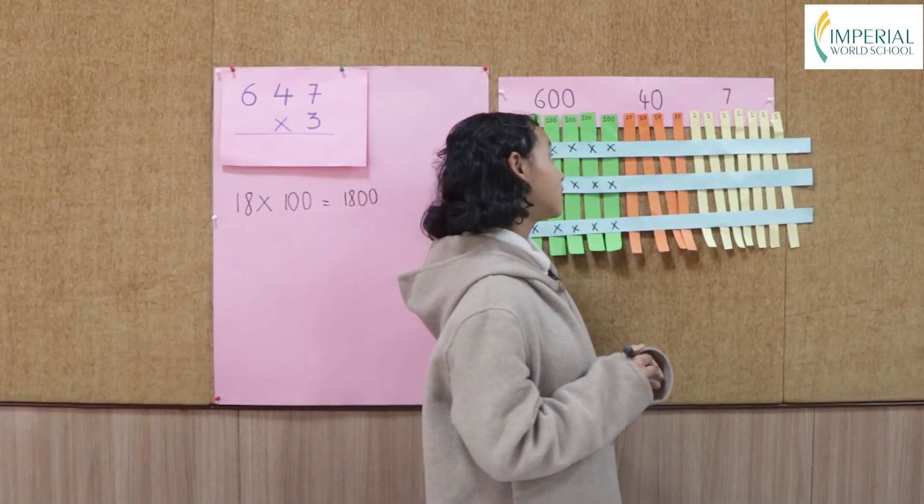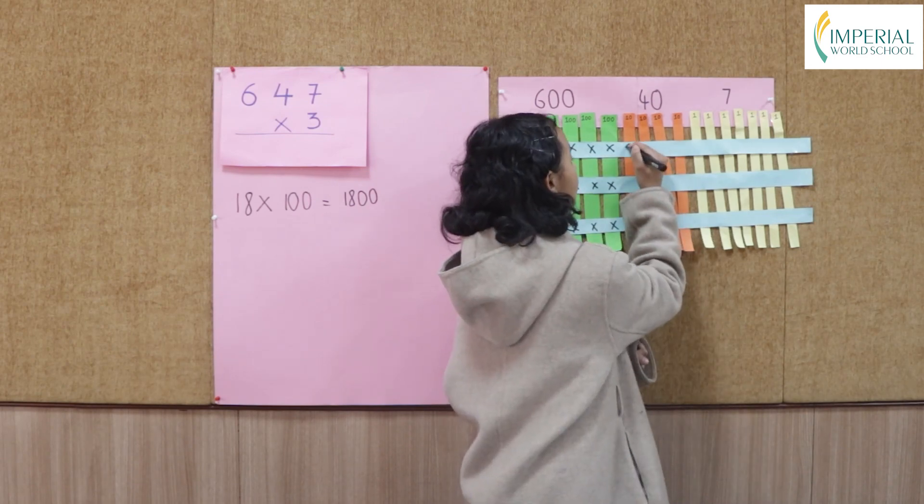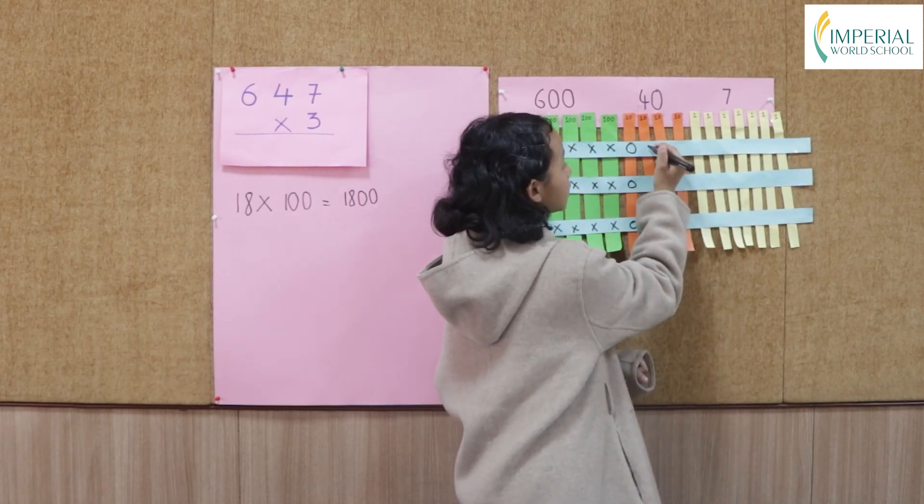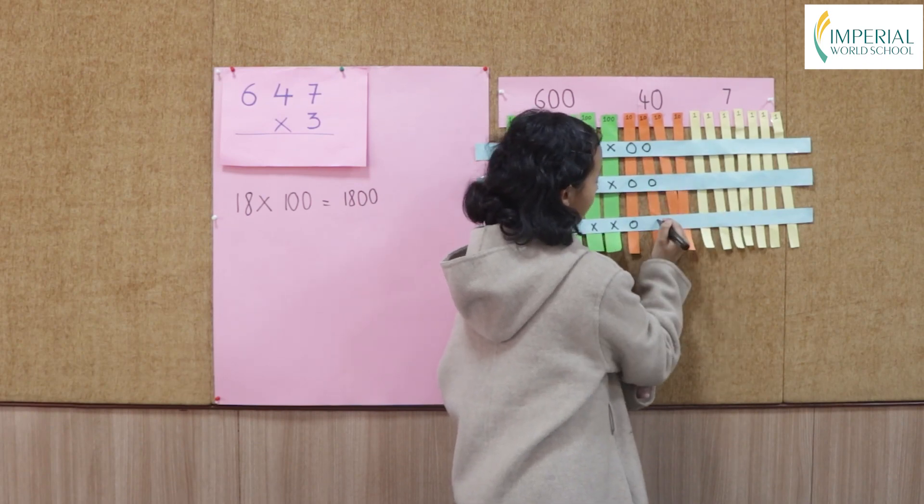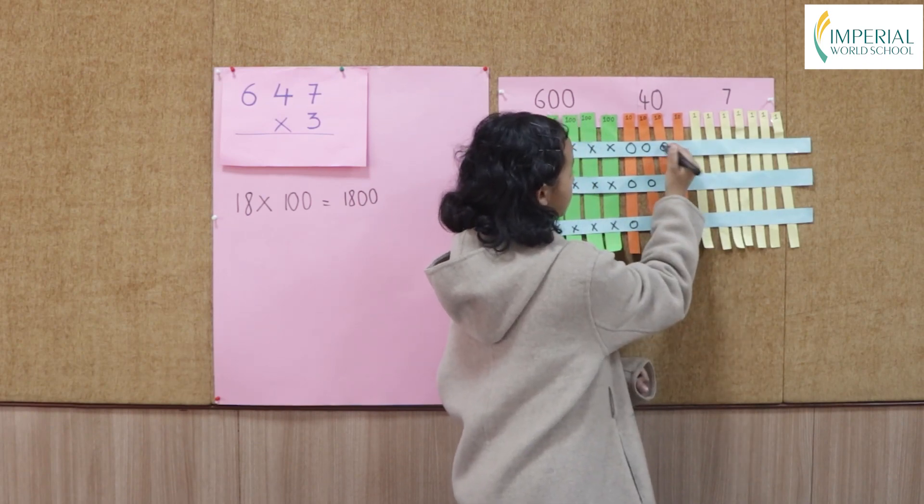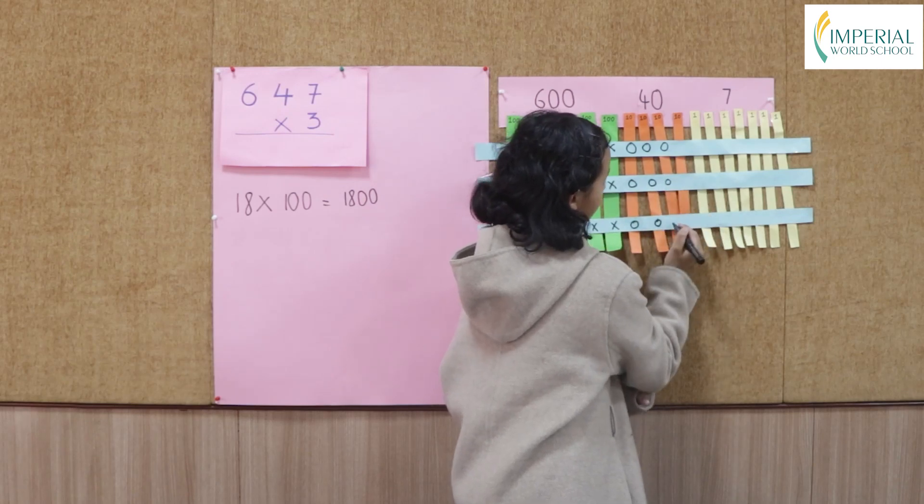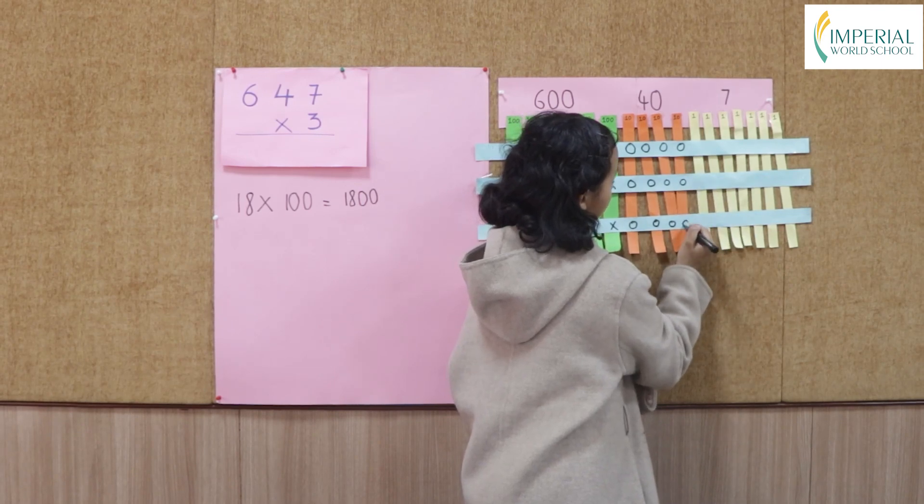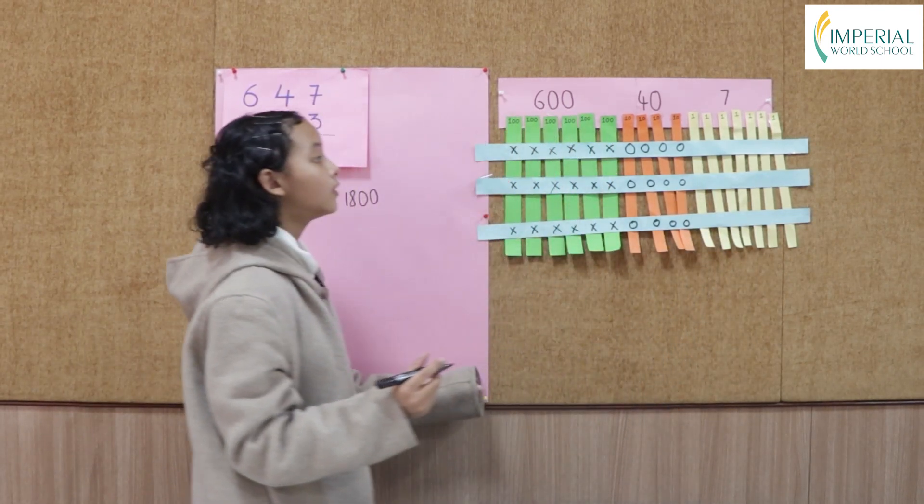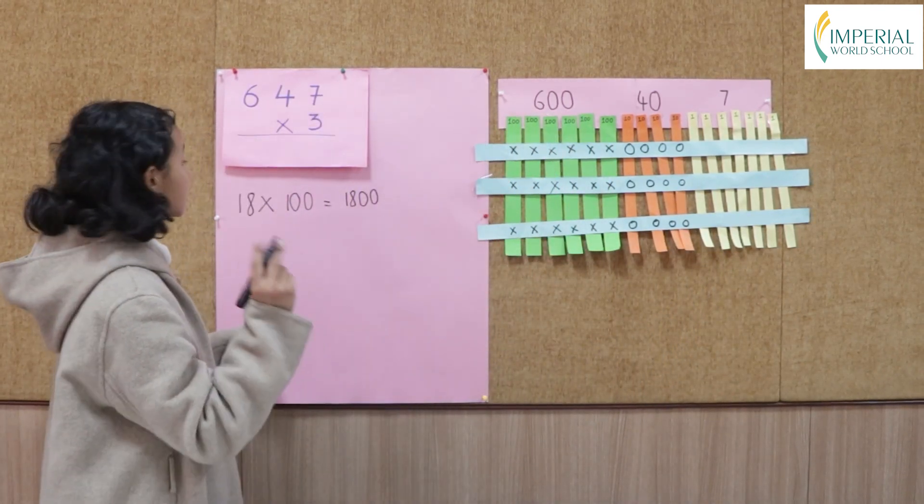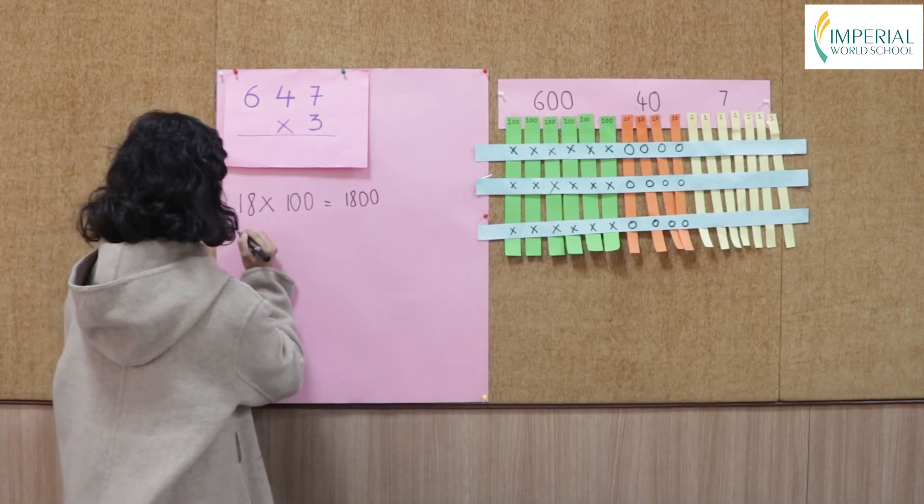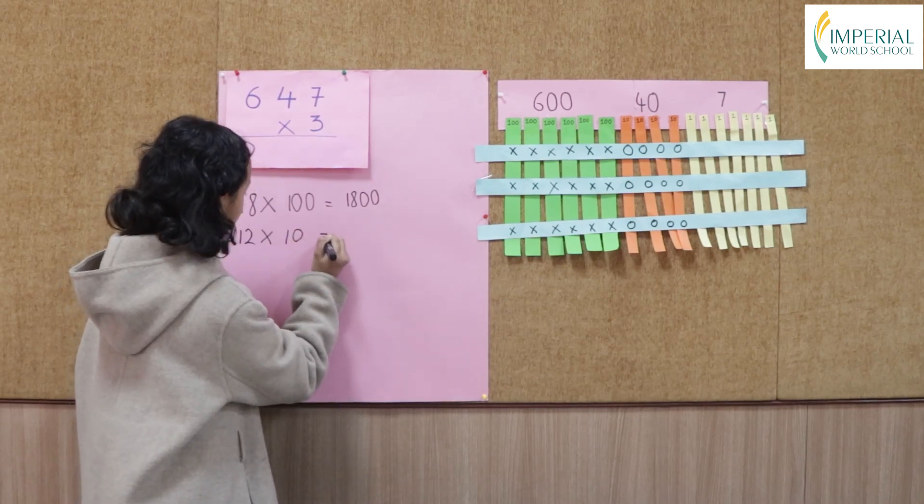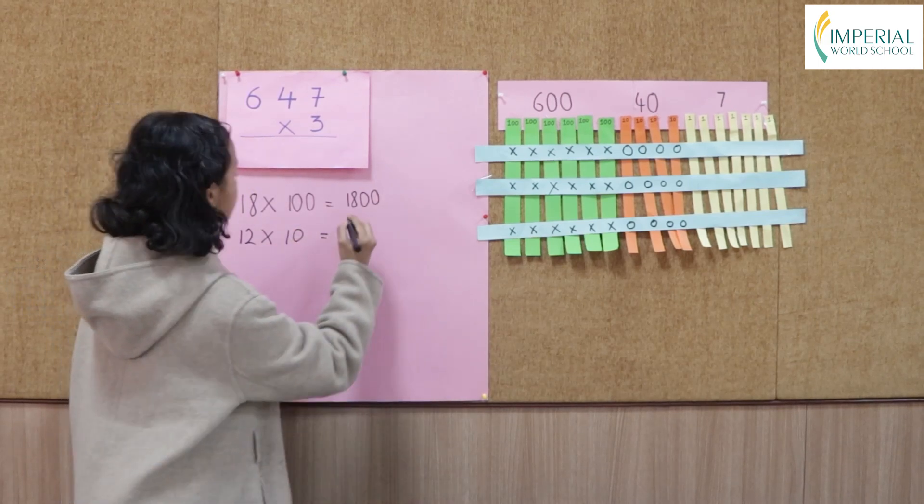Now let's move on to 10s. 1, 2, 3, 4, 5, 6, 7, 8, 9, 10, 11, 12. There are 12 intersection points. Now 12 times 10 equals to 120.